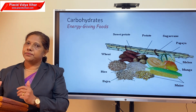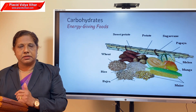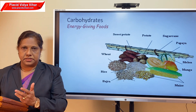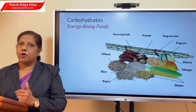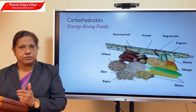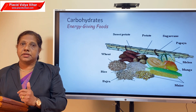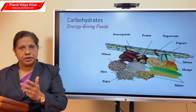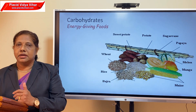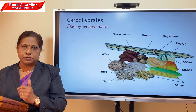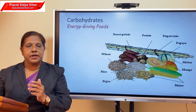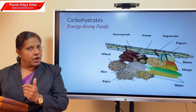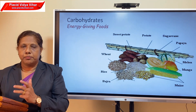There are different types of carbohydrates. Carbohydrates are present in honey in the form of fructose, in milk in the form of lactose, and in table sugar in the form of sucrose. We get these carbohydrates mainly from plants.